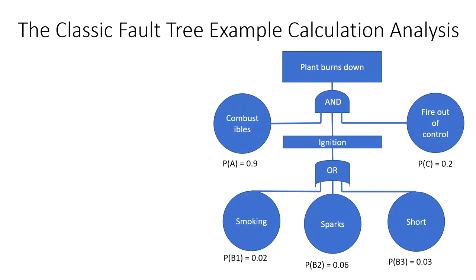Fault tree analysis is a top-down method for finding the reliability and safety of a system, and it is probabilistic — it will finally produce a probabilistic value for how safe some system is.